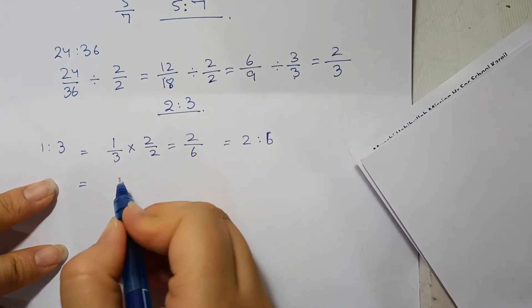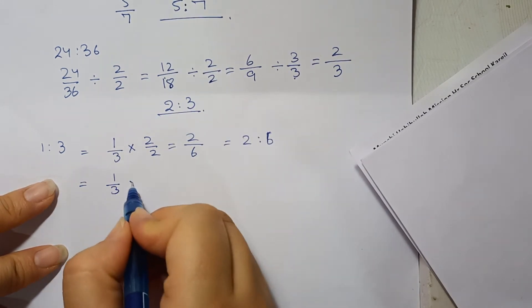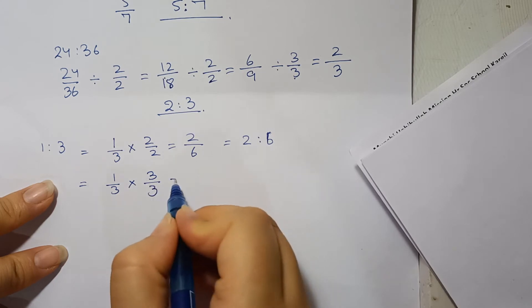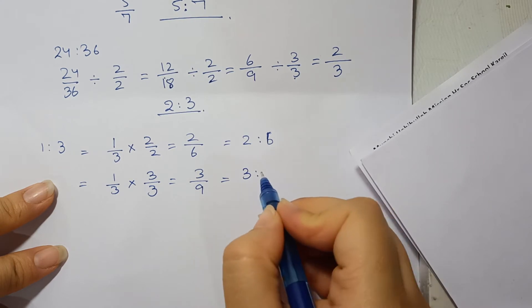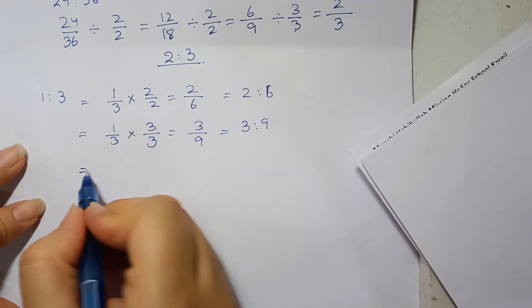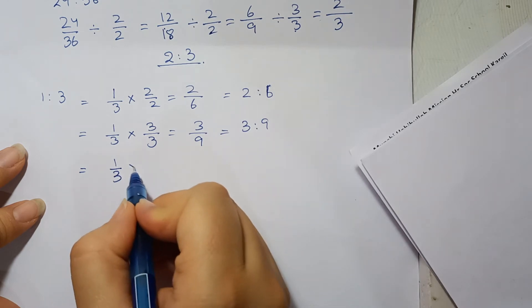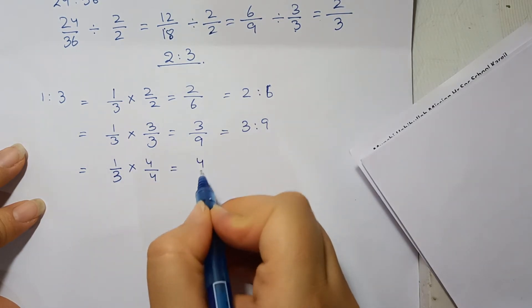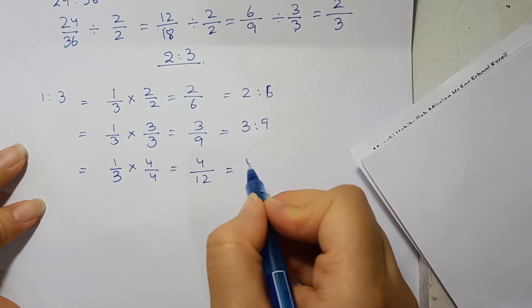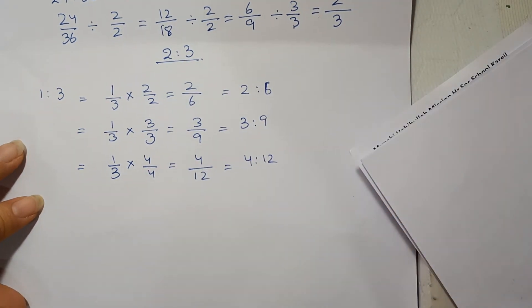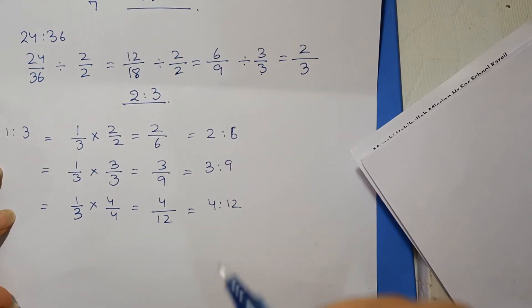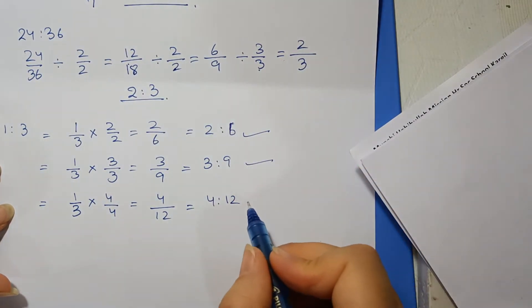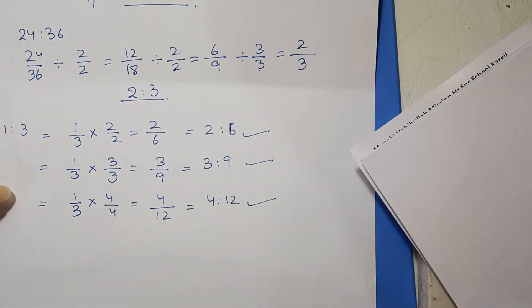This was one equivalent ratio. What are we going to do? 1 by 3 multiply 3 by 3, 3 upon 9 is your second equivalent ratio. 1 by 3, multiply 4 by 4, 3 fours are 12, so 4 is to 12 is your third equivalent ratio. So we have equivalent ratios: 2 by 6, 3 by 9, and 4 by 12. This is your B part.